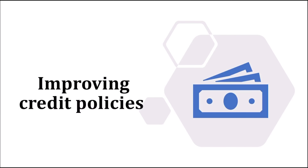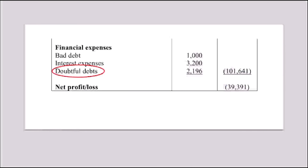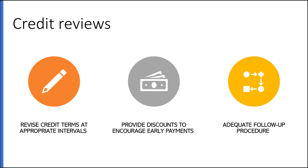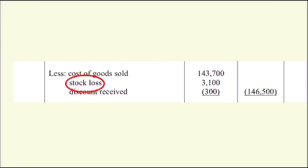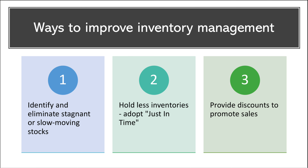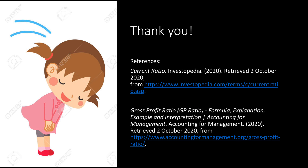Next, the business should improve their credit policies to reduce the expenses of doubtful debts as well as bad debts. The company should revise credit terms at appropriate intervals to match the needs of the customer, provide discounts to encourage early payments, and generate reminders. Lastly, the company should improve their stock management to prevent stock loss. The company should eliminate stagnant stocks, adopt just-in-time to hold less inventory, and provide discounts. And that's it — thank you!